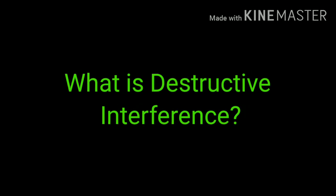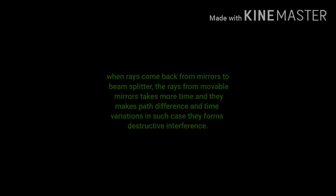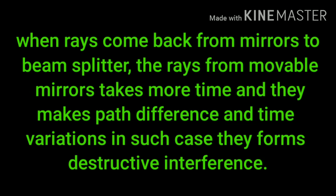Now let's understand destructive interference. When rays are split from the beam splitter, some rays transfer towards the fixed mirror and some towards the movable mirror. But here the moving mirror moves back and creates a greater distance than the fixed mirror. So the rays traveling from the movable mirror take more time and create a path difference and time variation. In such a case, they form destructive interference.